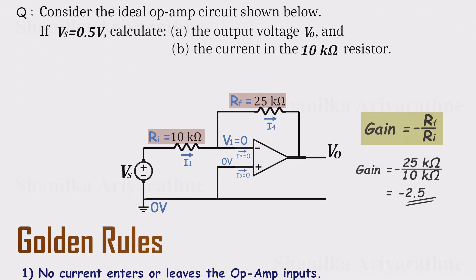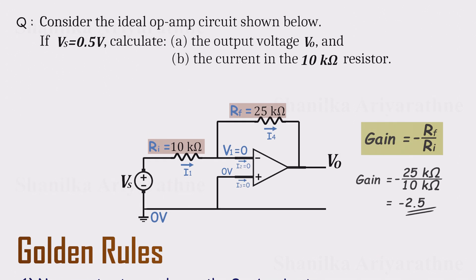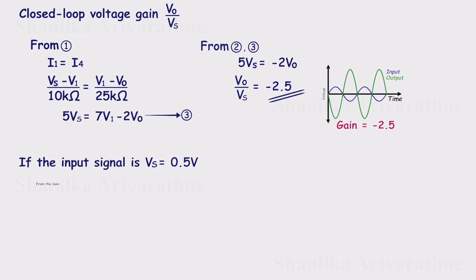Now that we've found the gain, calculating the output voltage is straightforward. With a gain of minus 2.5, the output is simply minus 2.5 times the input. So if the input is 0.5 volts, the output comes out to minus 1.25 volts.